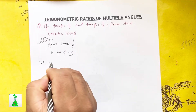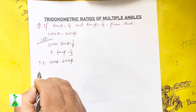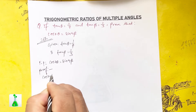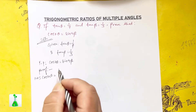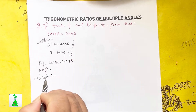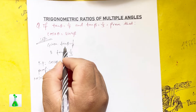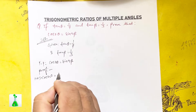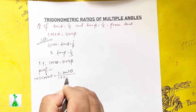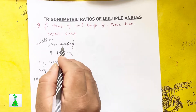Proof. LHS: cos 2 theta. We have the formula cos 2 theta equals 1 minus tan square theta divided by 1 plus tan square theta. This is the multiple angle formula.